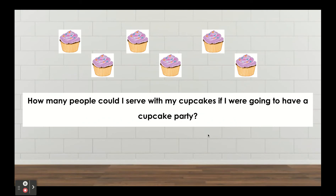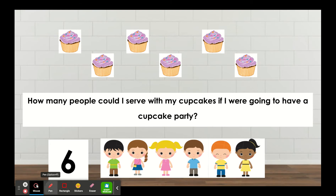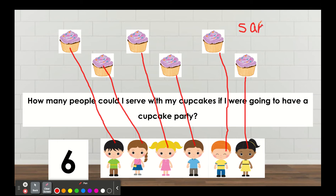Let's first practice with something we used before. Take a look at this picture. How many people could I serve with my cupcakes if I were going to have a cupcake party? Go ahead and count. How many cupcakes are here? Six. I can serve six people cupcakes. We can draw lines from each person to a cupcake: one, two, three, four, five, six. Here I can use the words: the same as. I have the same number of cupcakes as kids at my party. The same as.